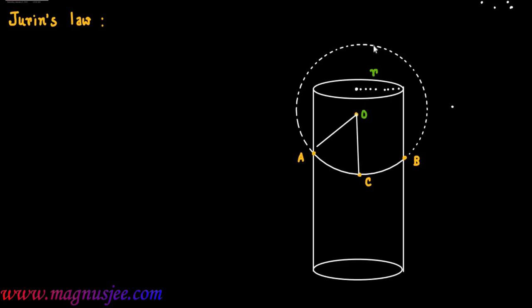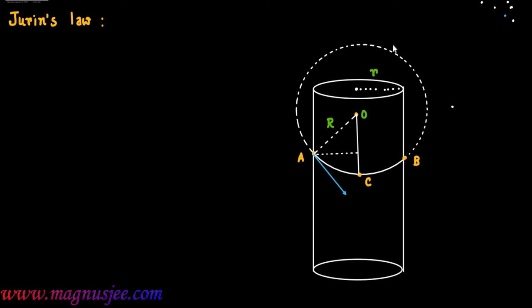OC is the radius of curvature of the liquid meniscus, or OA, which is equal to capital R, is also the radius of curvature of the liquid meniscus ACB. We can draw a normal from point A on the radius OC. This normal is also the radius of the capillary tube. Surface tension of liquid inside the capillary tube, that is S, acts along the tangent — surface tension always acts tangentially on the liquid meniscus or free surface of liquid in the capillary tube. AT is the tangent along which surface tension S acts at an angle theta.